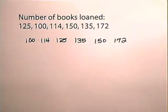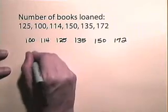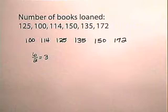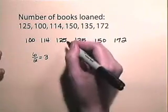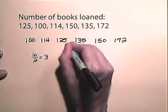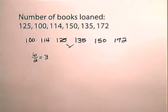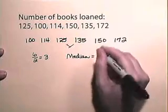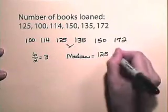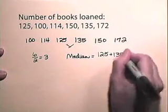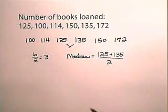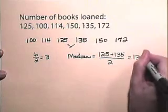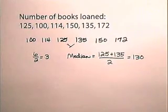There are six numbers here. So we're going to take six and divide it by two to get three. Since there is an even number of numbers, the median is the mean of the third and fourth number. So the median is going to be 125 plus 135 divided by two, which is 130. So the median number of books loaned is 130.